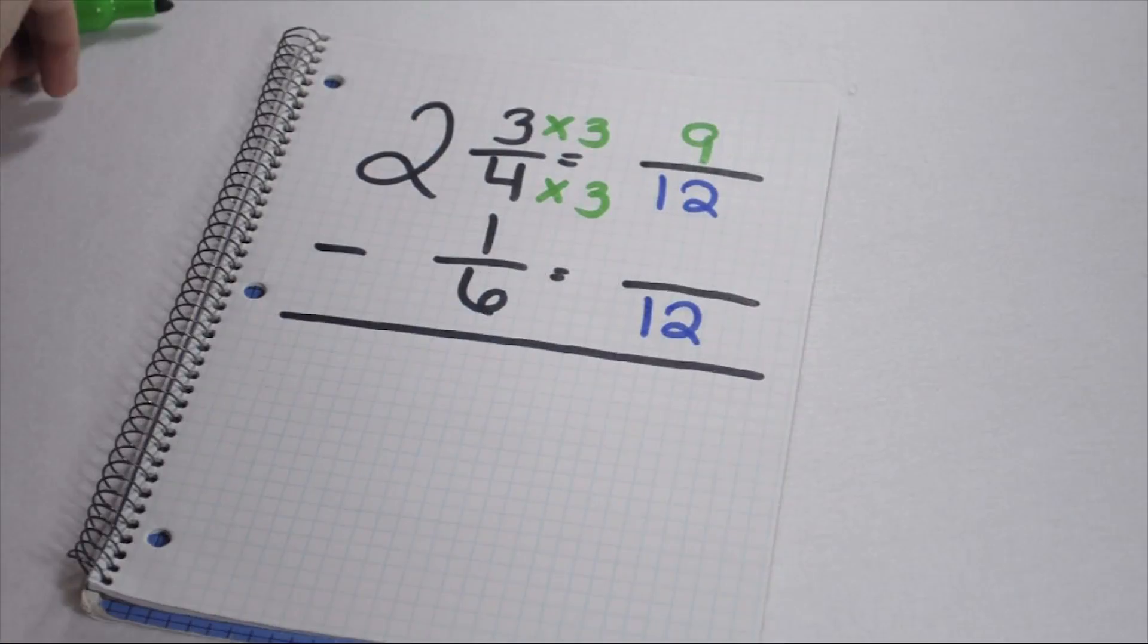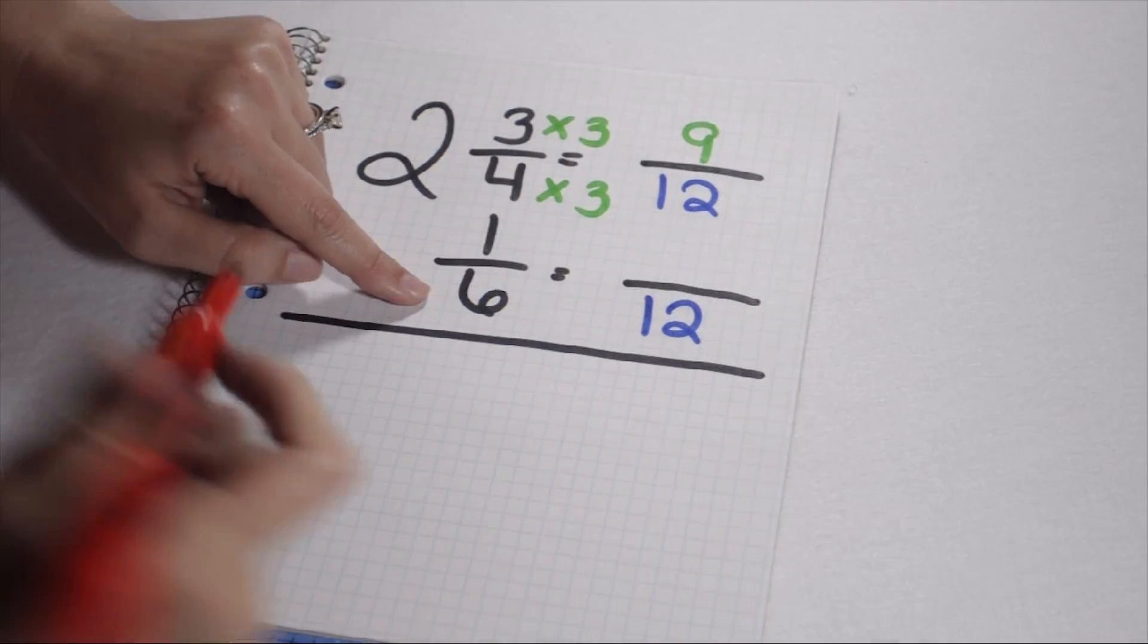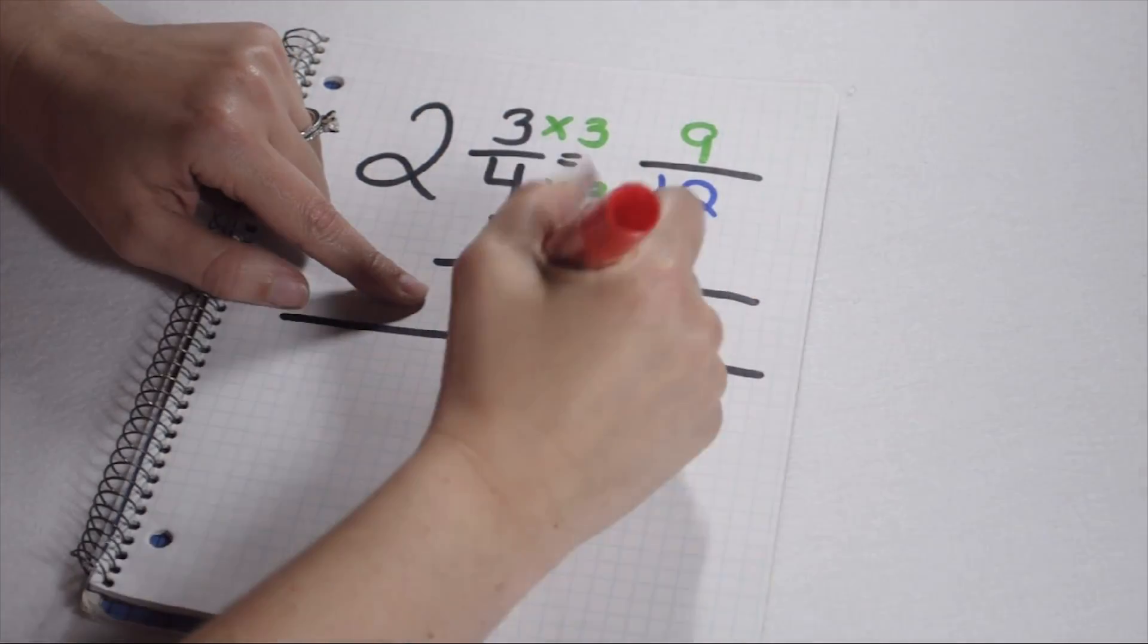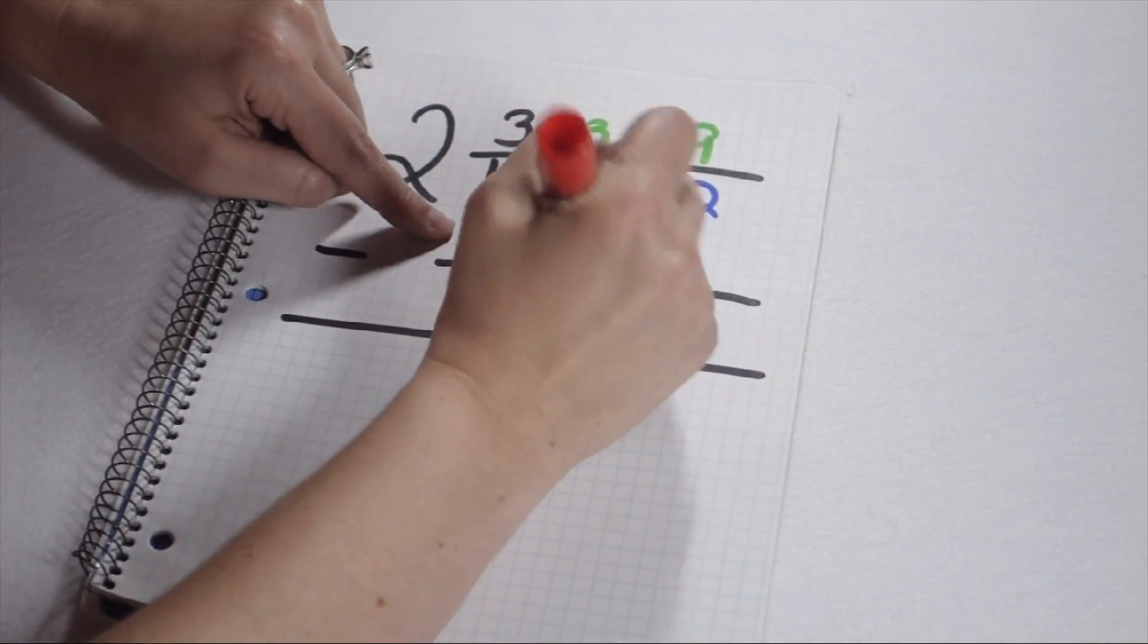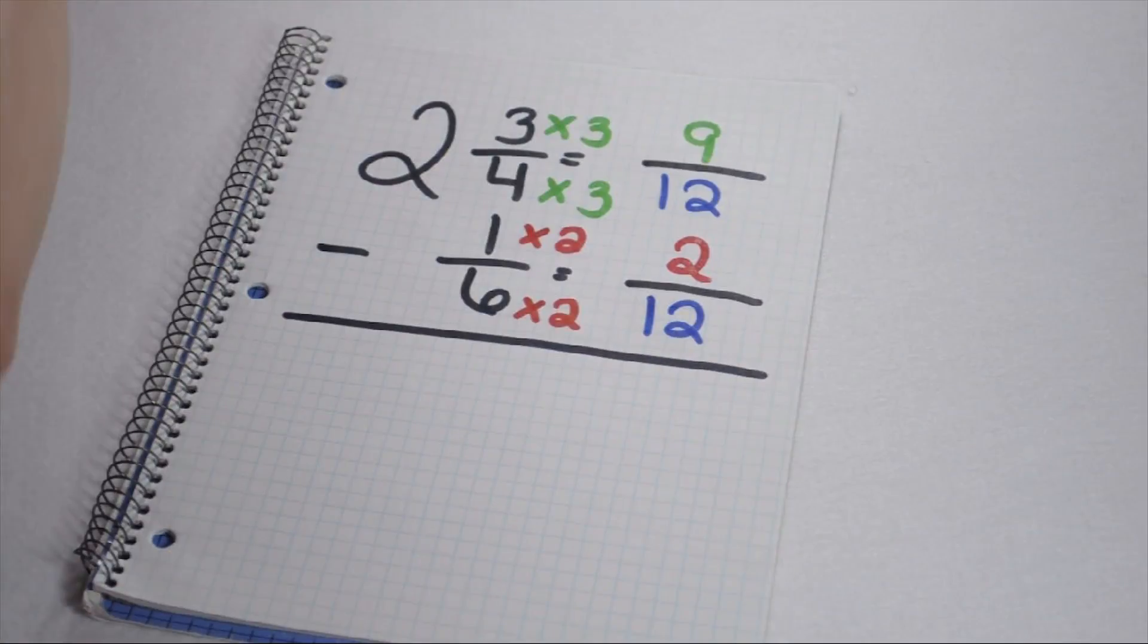We can then do the same thing for 1 sixth. I multiply 6 times 2 to give me 12. That means I need to multiply my numerator by 2 as well. So 1 sixth is equivalent to 2 twelfths. Now we can subtract.